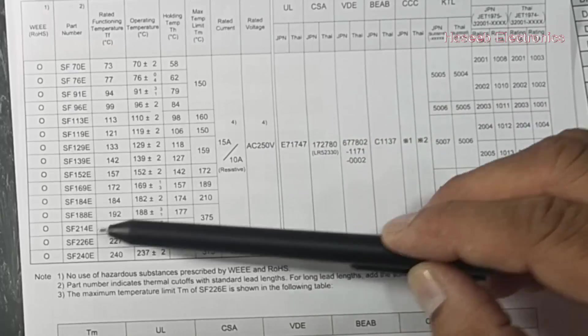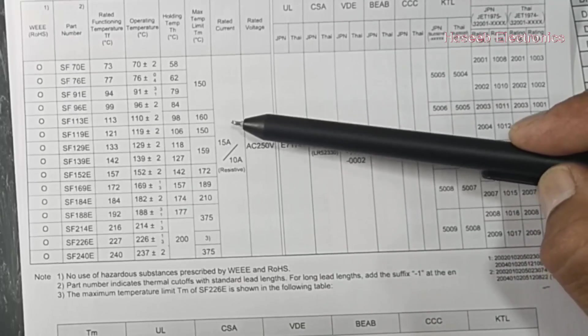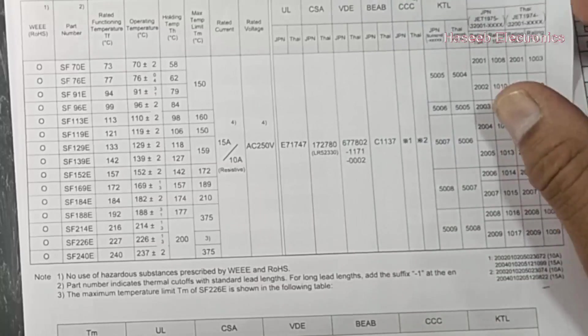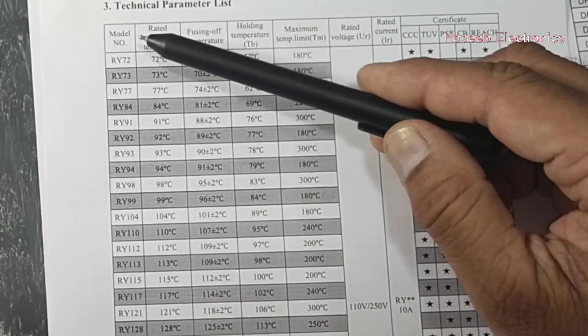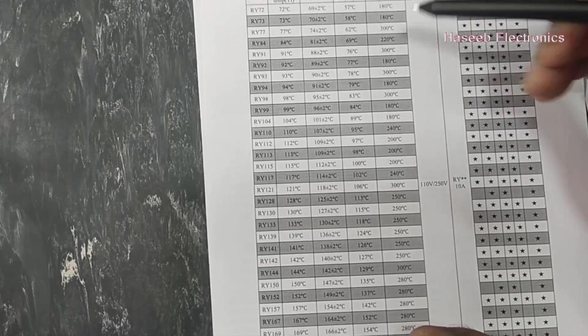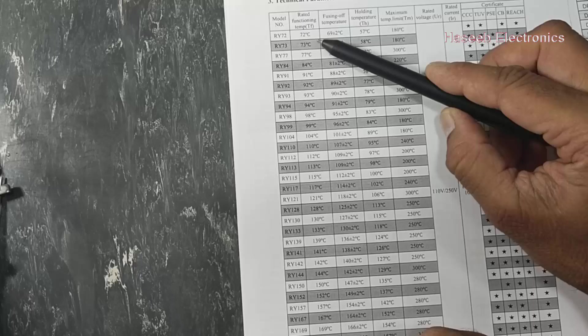It will work at 237 to 240 degree. It is operating temperature and it has current rating 15 ampere and 10 ampere. These categories are available in 10 ampere and 15 ampere at AC 250 volt rating.